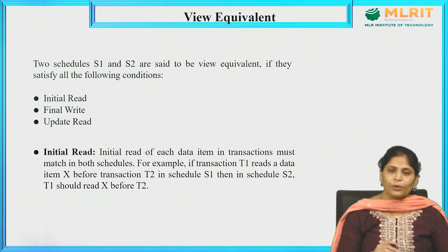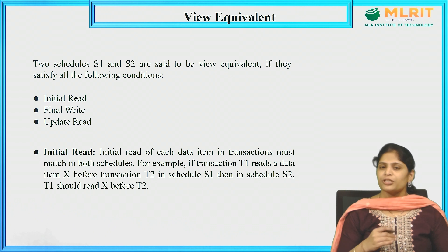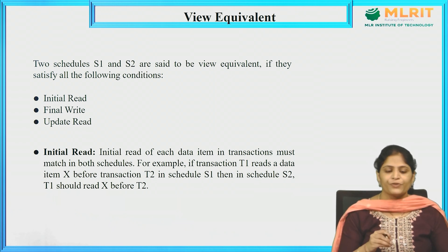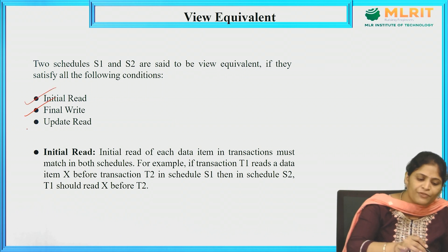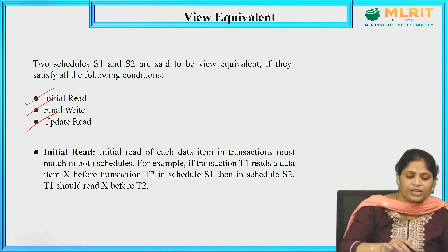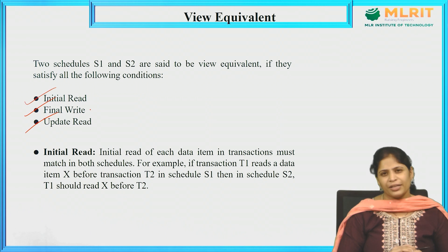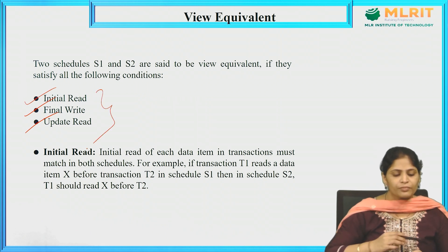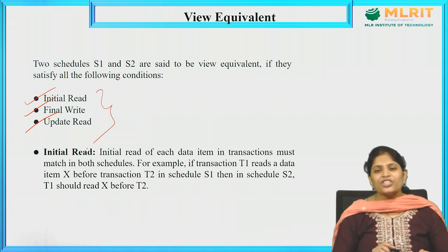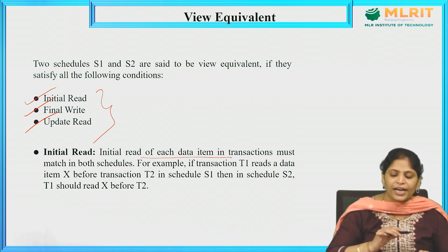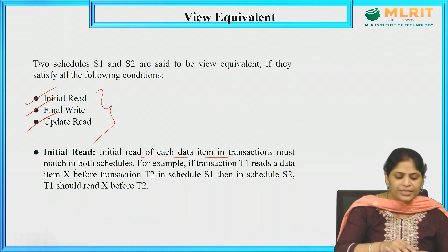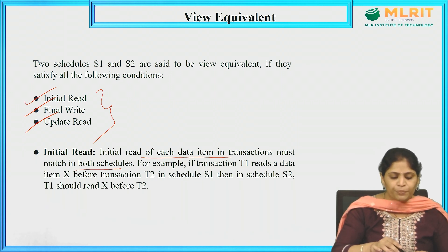What is view equivalent? To become view serializable, a schedule must become view equivalent. View equivalent means it must satisfy the following three conditions: initial read, final write, and update read. For the initial read condition, the initial read of each data item in a transaction must match in both schedules.